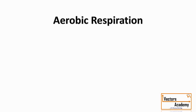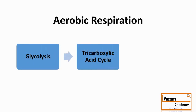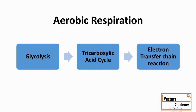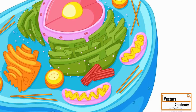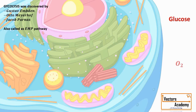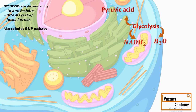Aerobic respiration involves three important steps: 1. Glycolysis, 2. Tricarboxylic acid cycle, 3. Electron transfer chain reaction. Glycolysis takes place in the cytoplasm of the cell. Here, a hexose sugar glucose is broken down into two molecules of pyruvic acid, leading to the formation of ATP, NADH2, and water molecules.